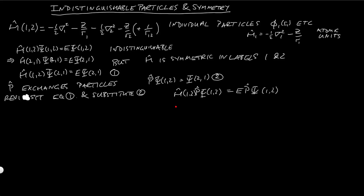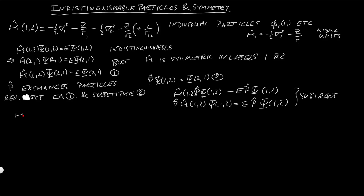Now if we take the initial equation H_12·psi(1,2) = E·psi(1,2) and act on the left with p-hat, we get p-hat·H_12·psi(1,2) = E·p-hat·psi(1,2). Subtracting these two equations gives (H-hat·p-hat minus p-hat·H-hat) acting on psi(1,2) equals zero, which of course implies that the commutator of H-hat and p-hat equals zero. Therefore H-hat and p-hat share eigenvectors — they can both act on the same set of eigenvectors.